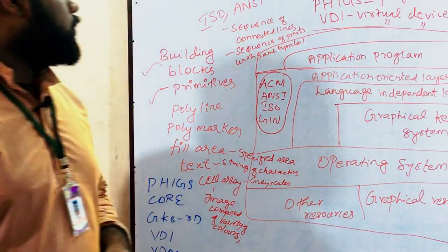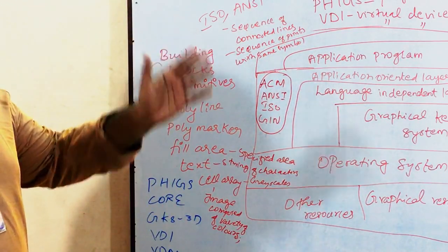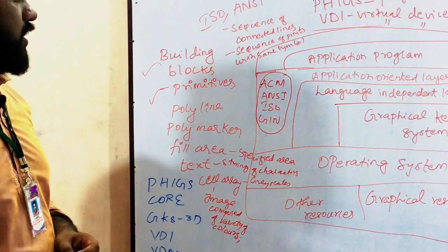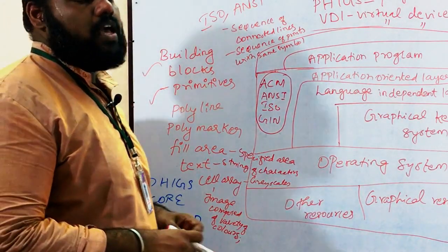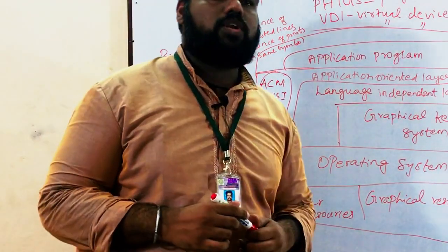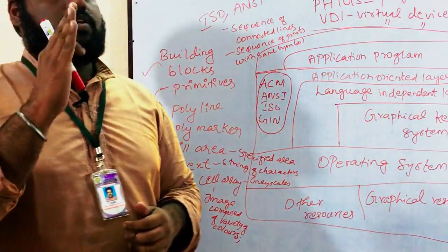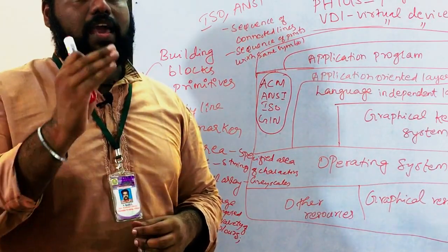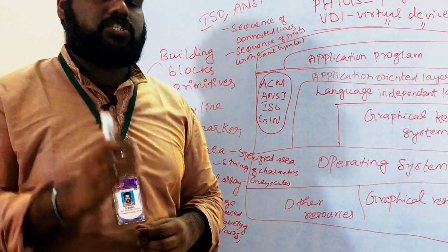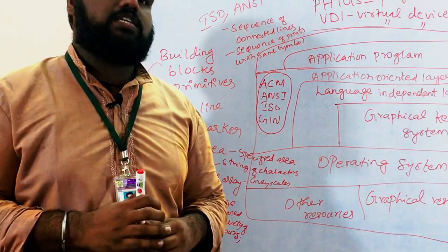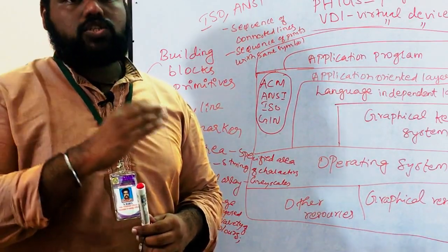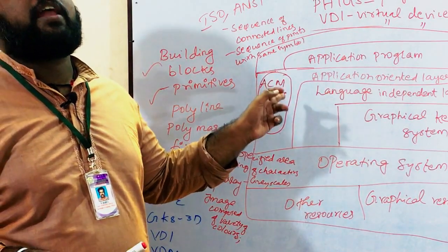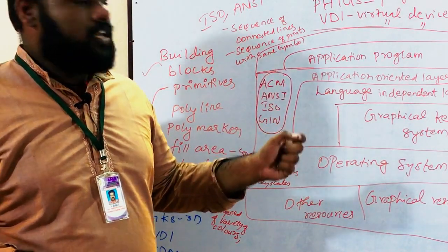Now we will cover the important topic of GKS, that is Graphics Kernel System. The Graphic Kernel System is the first proposed standard for graphics by ISO, that is International Standards Organization, and also ANSI, that is American National Standards Institute.